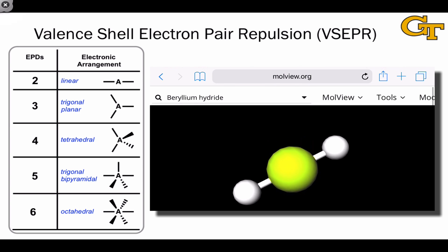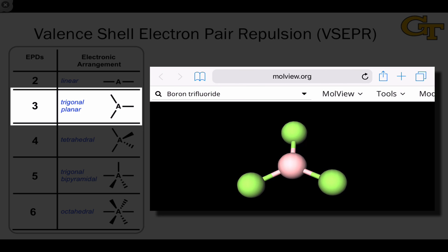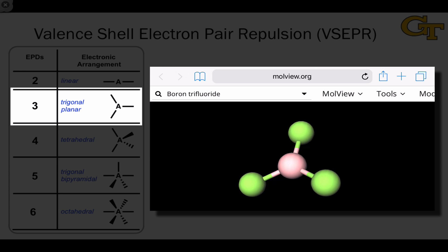If we move to three electron pair domains, we get the trigonal planar arrangement. This places the three bonds to the central atom at an angle of 120 degrees to each other in a common plane. This is the molecule boron trifluoride. The central boron atom has three BF bonds and no lone pairs, so it exemplifies the trigonal planar electronic arrangement.